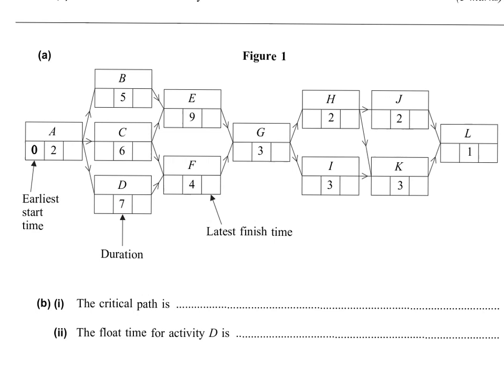This diagram tells us that we have to start task A before anything else, and tasks B, C, and D cannot start until A is completely finished. As you can see, the left-hand side box is the earliest start time, and the middle box is the duration of each task.